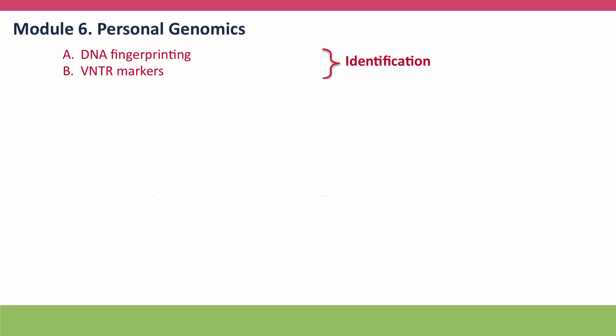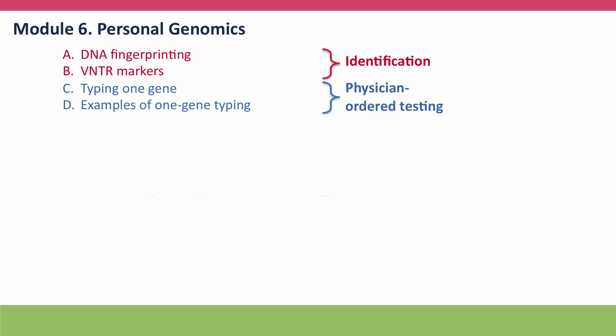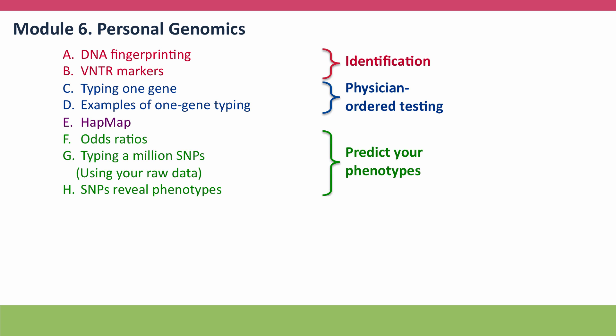We'll start with how personal genomics is used for identification, primarily by the legal system with DNA fingerprinting, and then physician-ordered tests that let us find out the genotype for just one gene. But then, after a little detour to one of my favorite websites, HapMap, we'll consider how genome-wide association studies have enabled us to use SNP typing to predict our phenotype for many different traits.